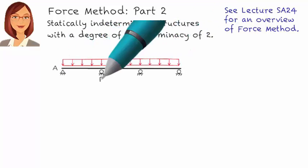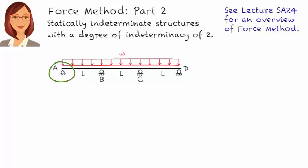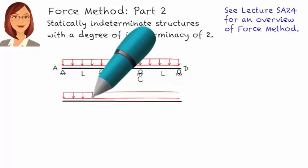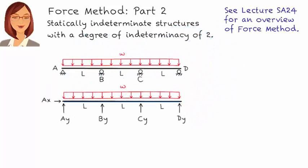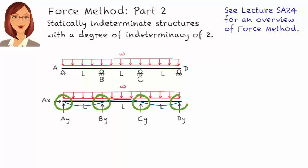Here is one such beam. It rests on one pin and three rollers, so there are five support reaction forces. Although the beam is going to deform under the applied load, there is no vertical displacement at the supports. Vertical displacement at A, B, C, and D remain zero.